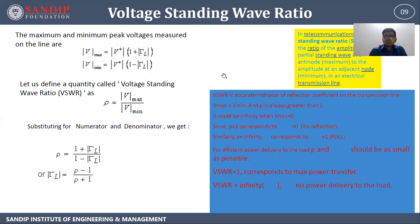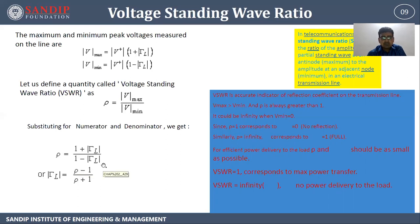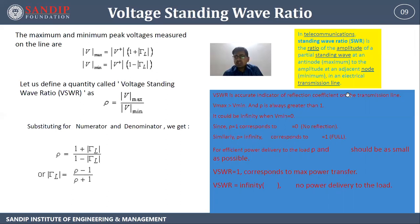Next is voltage standing wave ratio. The maximum and minimum peak voltages measured on the line are V_max equal to V-positive times (1 plus reflection coefficient) and V_min equal to V-plus times (1 minus reflection coefficient). Let us define a quantity called voltage standing wave ratio VSWR as the ratio of voltage maximum upon voltage minimum. VSWR is equal to (1 plus reflection coefficient) upon (1 minus reflection coefficient). In telecommunications, standing wave ratio is the ratio of amplitude of a partial standing wave at an antinode maximum to the amplitude at an adjacent node minimum in an electrical transmission line.